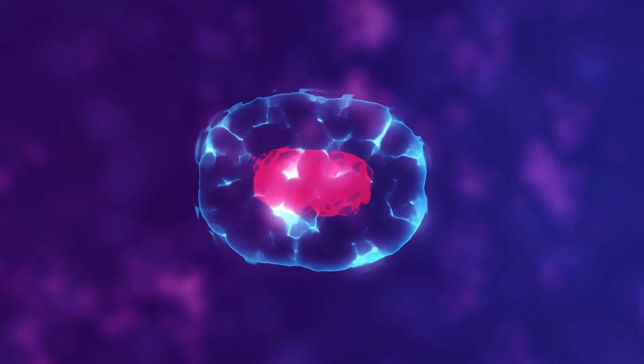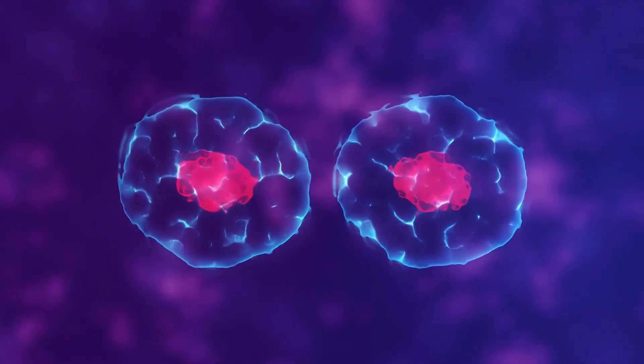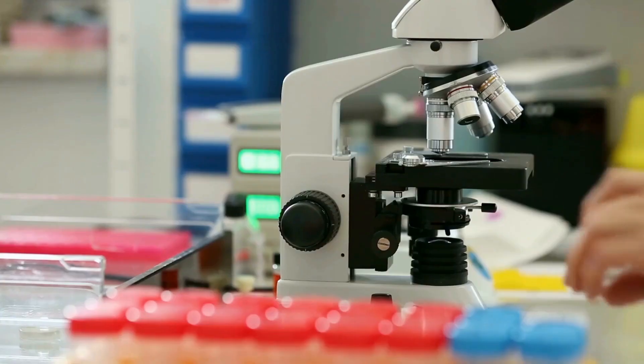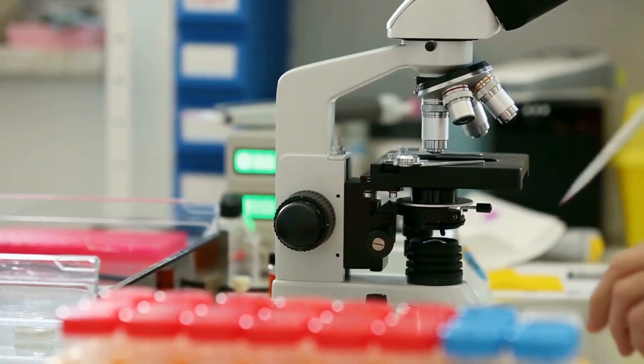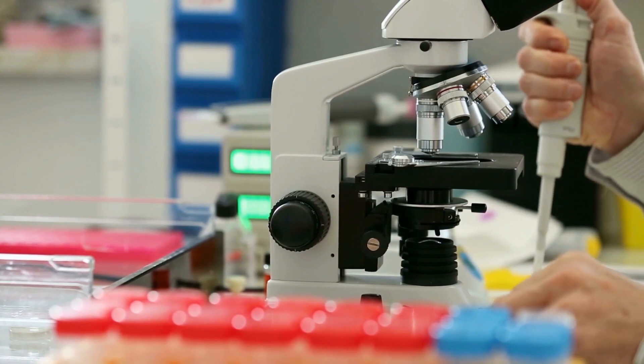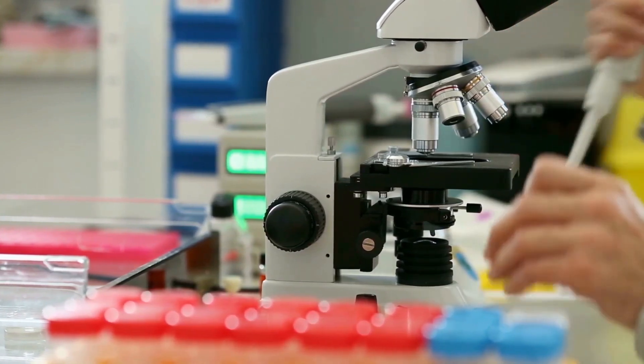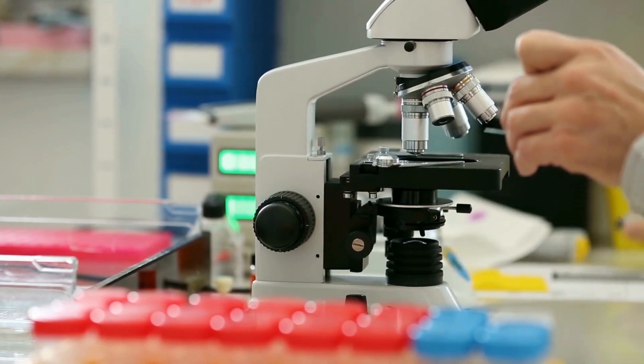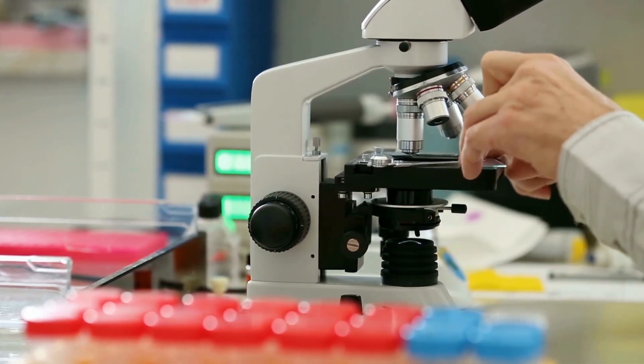There are three types of cloning: reproductive cloning, therapeutic cloning, and gene cloning. Reproductive cloning involves reproducing an entire organism. Therapeutic cloning is the creation of an embryo that can be used to create specialized cells for medical treatment. Gene cloning is the creation and manipulation of genes.